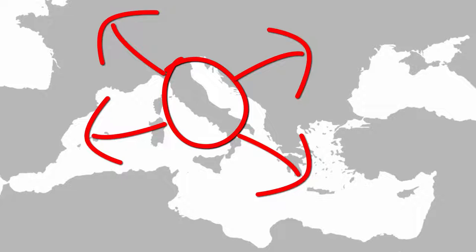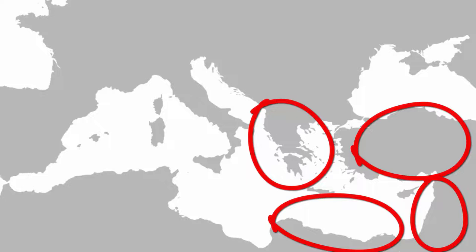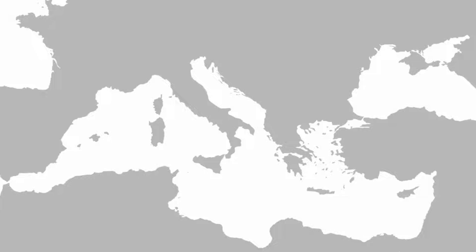The Latin alphabet spread from Italy along with the Latin language to the lands surrounding the Mediterranean Sea with the expansion of the Roman Empire. The eastern half of the Roman Empire, including Greece, Asia Minor, and Egypt, continued to use Greek as the lingua franca. But Latin was widely spoken in the western half, and western Romance languages like French, Italian, Portuguese, Spanish, and Catalan evolved out of Latin. They also continued to use the Latin alphabet.